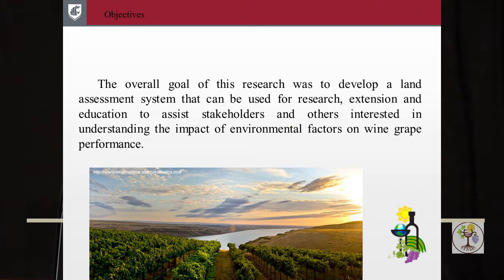And why are they good for grapes? Well, as you all know, grapevine requires a distinct fusion of different environmental variables for their growth and development. Site selection for development of a new vineyard is one of the most important decisions a grower makes because it directly affects the quality of grapes and also their yield, hence their final income. Our overall objective was to develop a spatial site assessment that can be used for research, extension, and education, and to help anybody interested in knowing more about the impact of different environmental variables on grapevine performance.